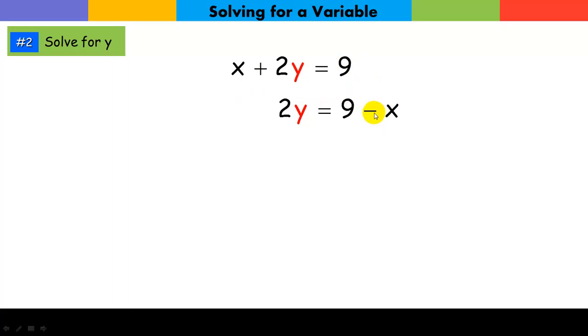Notice what I did. I subtracted x from both sides. 9 minus x, those are not like terms. And I can't do anything other than put 9 minus x. But now I have 2 times y. How do I get y alone? I'm going to divide by 2. And I divide this side by 2. This whole side by 2 is what I'm doing. I have to divide this whole side by 2. Notice that this groups it. That fraction bar groups it. Saying I'm dividing this whole thing by 2.